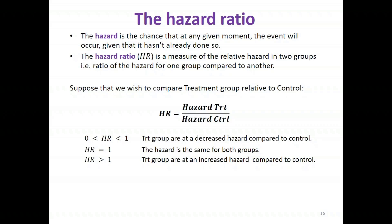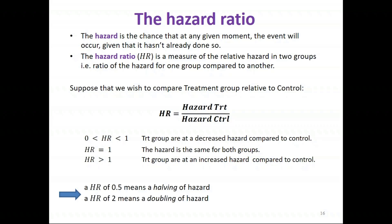The hazard ratio can take any value greater than zero. Values between zero and one indicate that the treatment group is at a decreased hazard compared to control. A hazard ratio equal to one indicates the hazard is the same for both groups. A hazard ratio greater than one indicates that the treatment group is at an increased hazard compared to control.